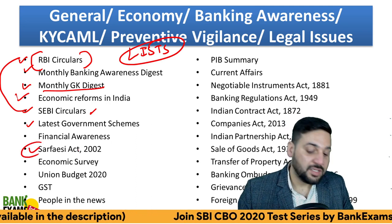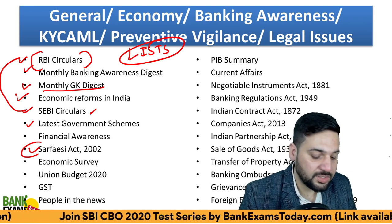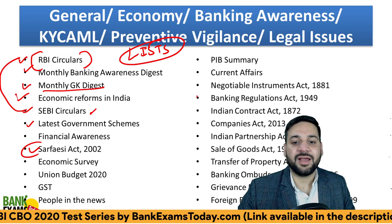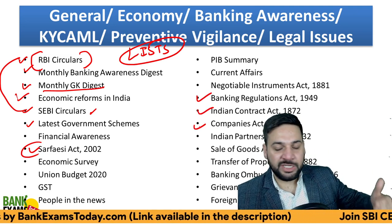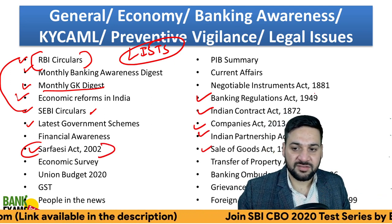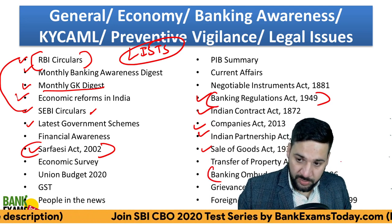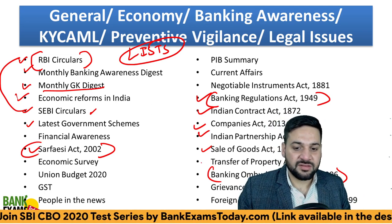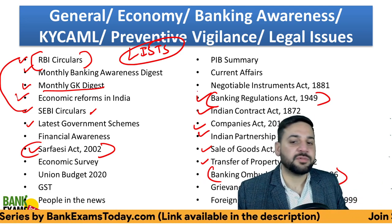The SARFAESI Act is very important for the exam — please go through it. The Negotiable Instruments Act, Banking Regulation Act, Indian Contract Act, basics of the Companies Act, and Partnership Act basics are also important — though you don't need to go in depth on most of them. The most important acts are SARFAESI and Banking Regulation. The Ombudsman scheme can be covered within five to six pages and is not that difficult.